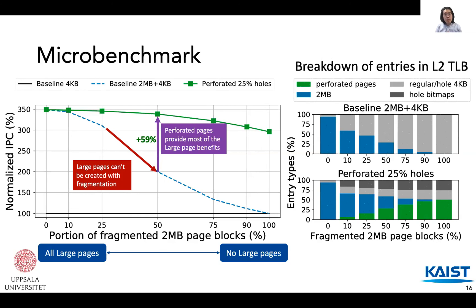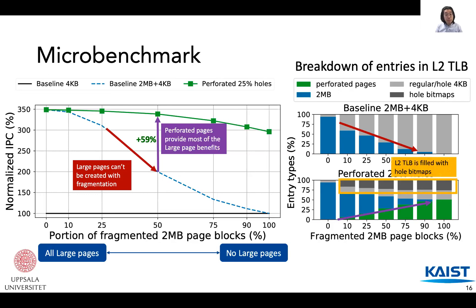The TLB entry breakdown shows the percentage of each type of TLB entry in the level 2 TLB. The baseline TLB shows a gradual drop of large page entries, whereas perforated pages step up to fill the loss. With perforated pages, the level 2 TLB also holds bitmaps, which aids perforated pages to provide more effective TLB coverage — thus the perforated page TLB shows better TLB coverage even with all 2MB regions fragmented.